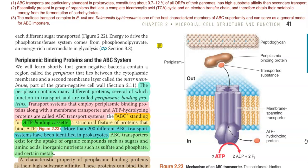The maltose transport complex present in E. coli and Salmonella typhimurium is one of the best characterized members of the ABC superfamily of proteins, and it is serving as a model for studying ABC importer type proteins.